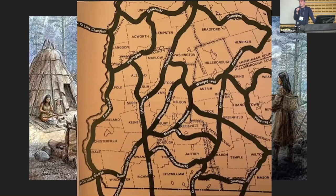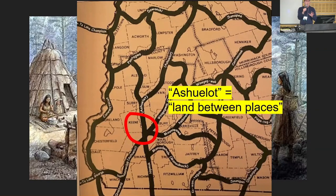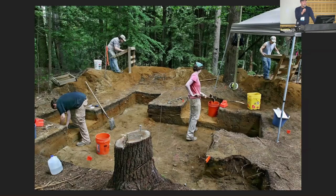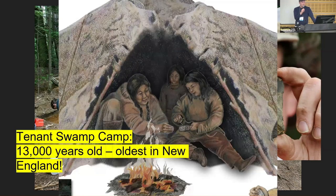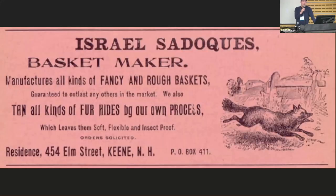We are in a hub of waterways — the Ashuelot coming in, the Minnewawa, Otter Brook. The word 'Ashuelot' itself means something like 'land between places' or 'land between waters,' or sometimes 'gathering waters' or 'waters coming together.' The Tenant Swamp camp is 13,000 years old — the oldest human settlement in New England — and it's right in our backyard, by the middle school. The Abenaki were not just long ago and far away; they are still part of the history of the region.